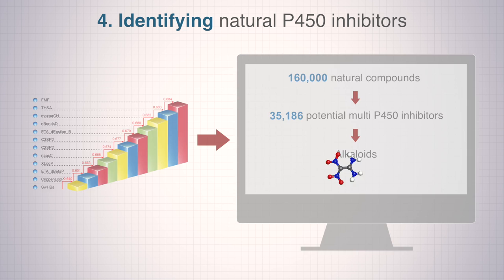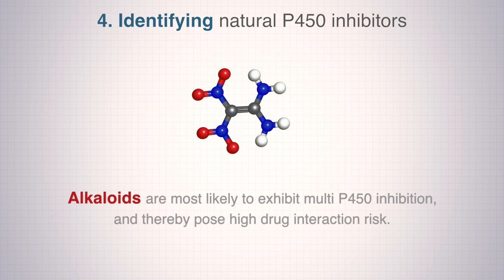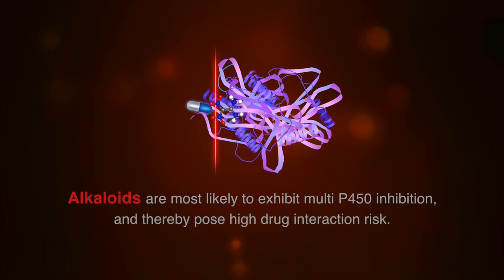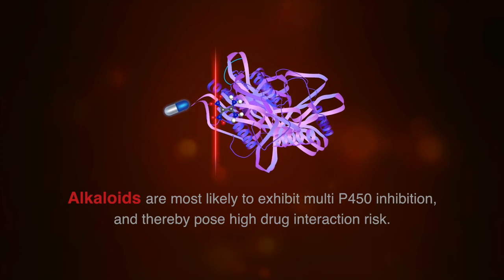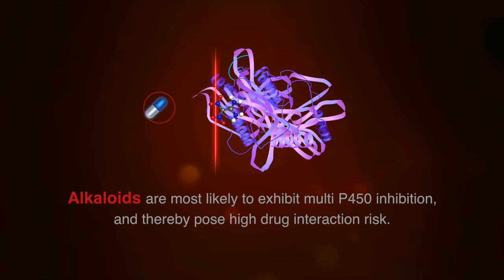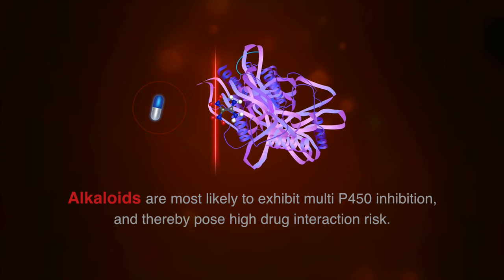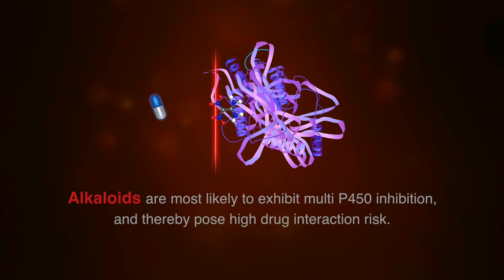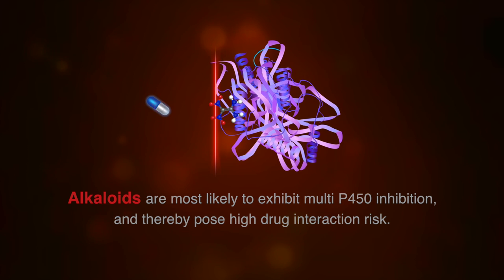By modeling NNCs, we found that alkaloids are most likely to exhibit multi-P450 inhibition and thereby pose high drug interaction risk. We think this finding can shed new light on multi-P450 inhibition caused by natural compounds and contribute to the rational use of natural compounds.